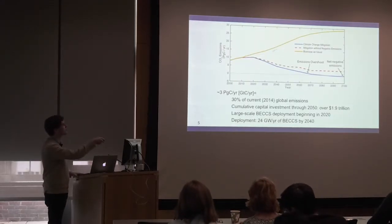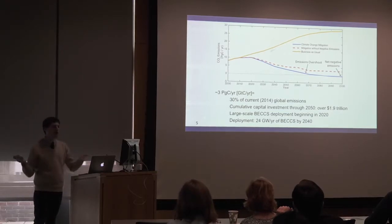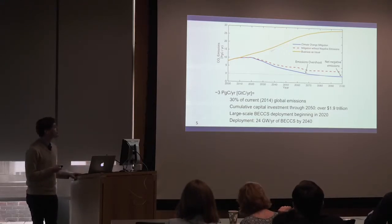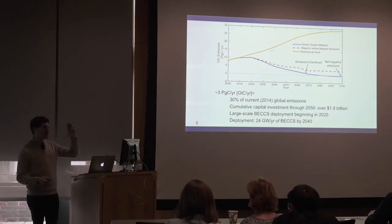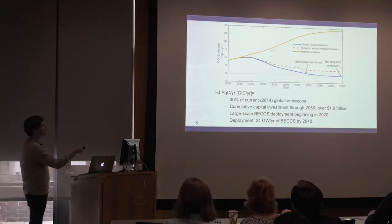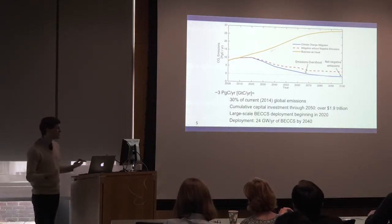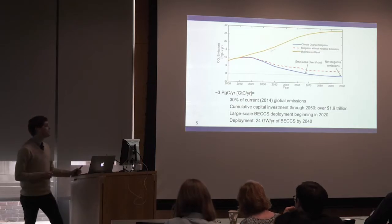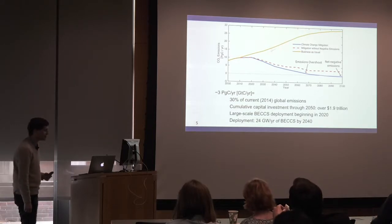Just to put that in perspective: RCP 2.6 has about 3 gigatons of carbon, about 10 gigatons of CO2 per year of BECCS by end of century. That's equivalent to 30% of current global emissions — 30% of that needs to be matched in scale by removal by end of century. Capital investment is about $2 trillion before 2050. Deployment starts around 2020, and you're building the equivalent of about 50 modern coal plants per year by 2040. This is big, real, and valuable if you care about fighting climate change.